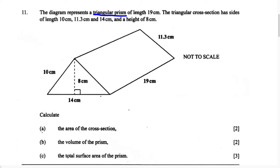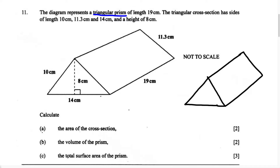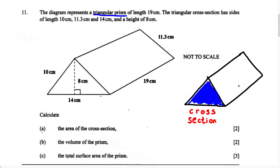Because we're dealing with a triangular prism, there are two parts we must remember. The first part is going to be known as the cross section, and the second part is going to be known as the length. The cross section is the triangle piece of the triangular prism. The length is going to be from where the rectangle starts to where it ends.